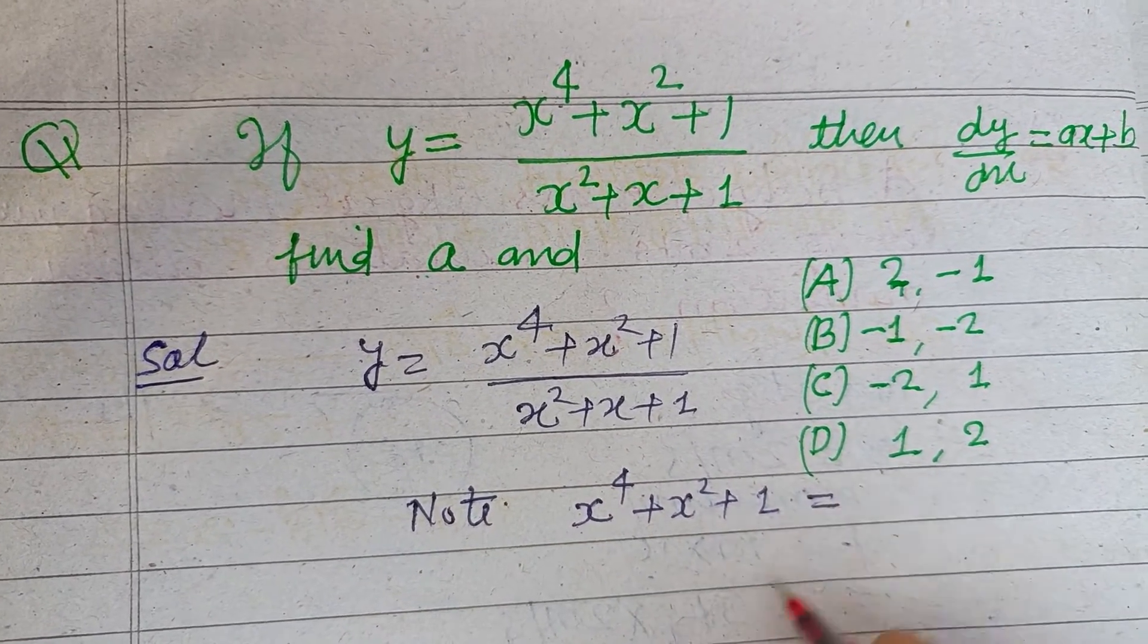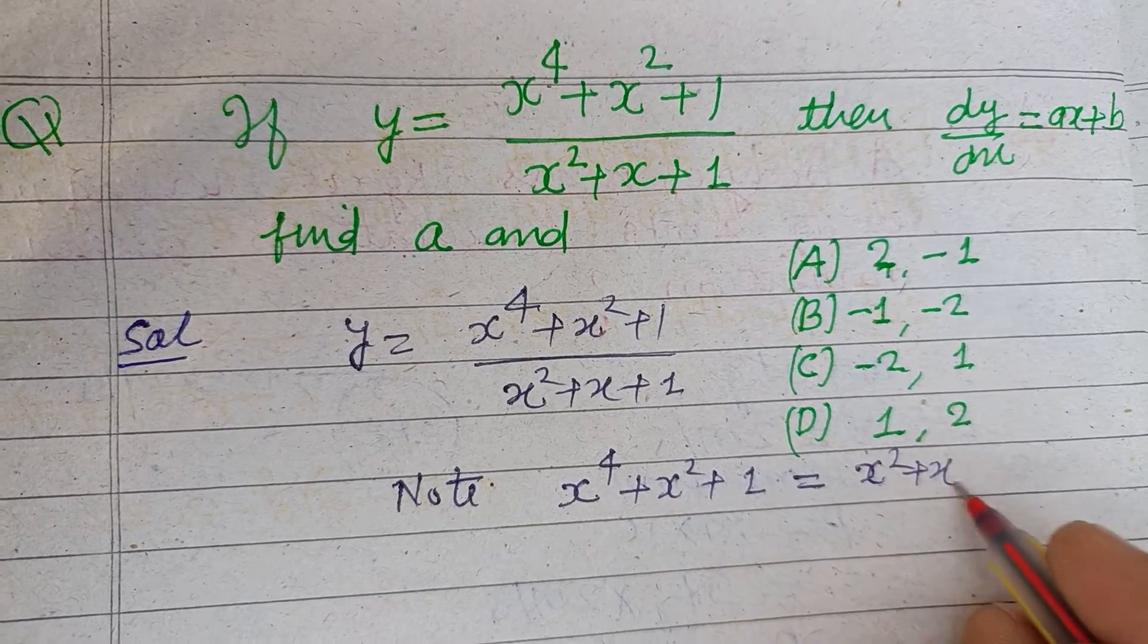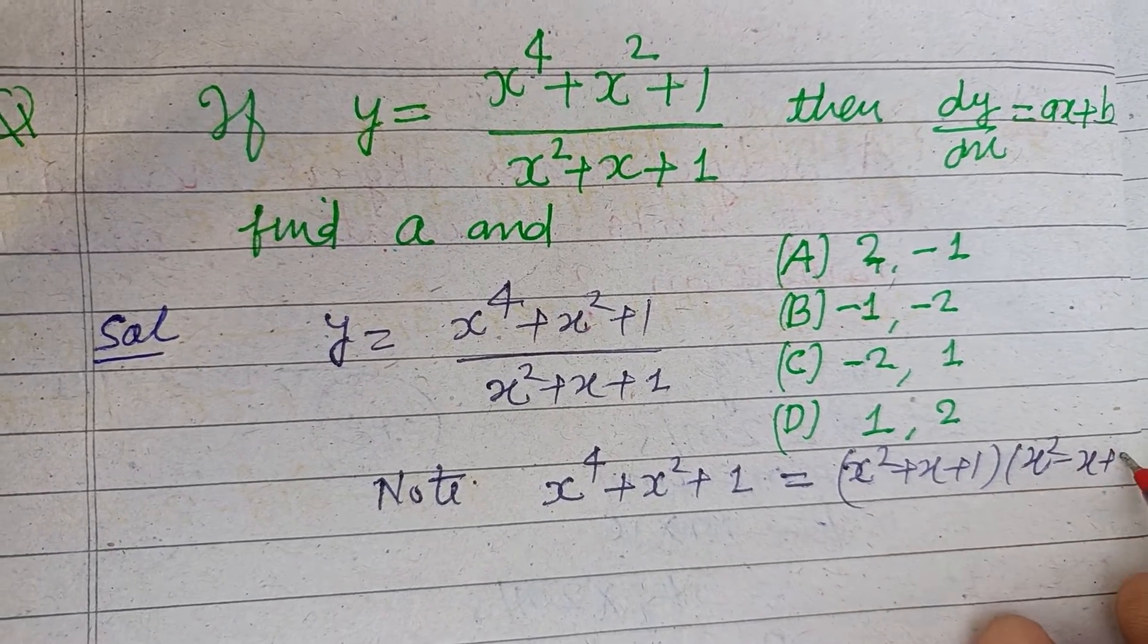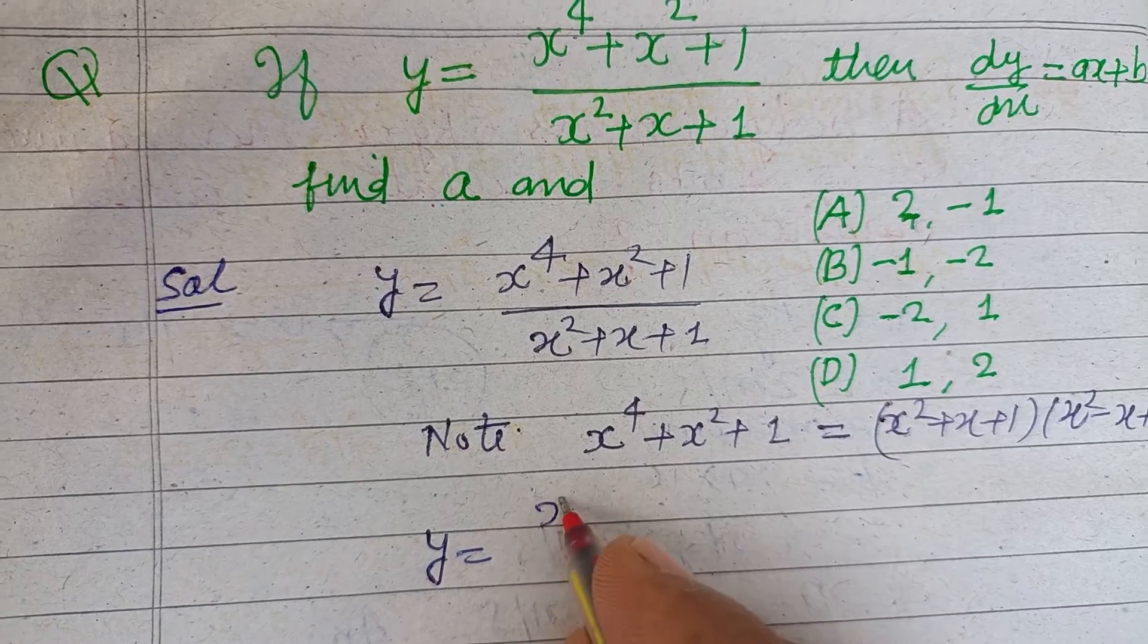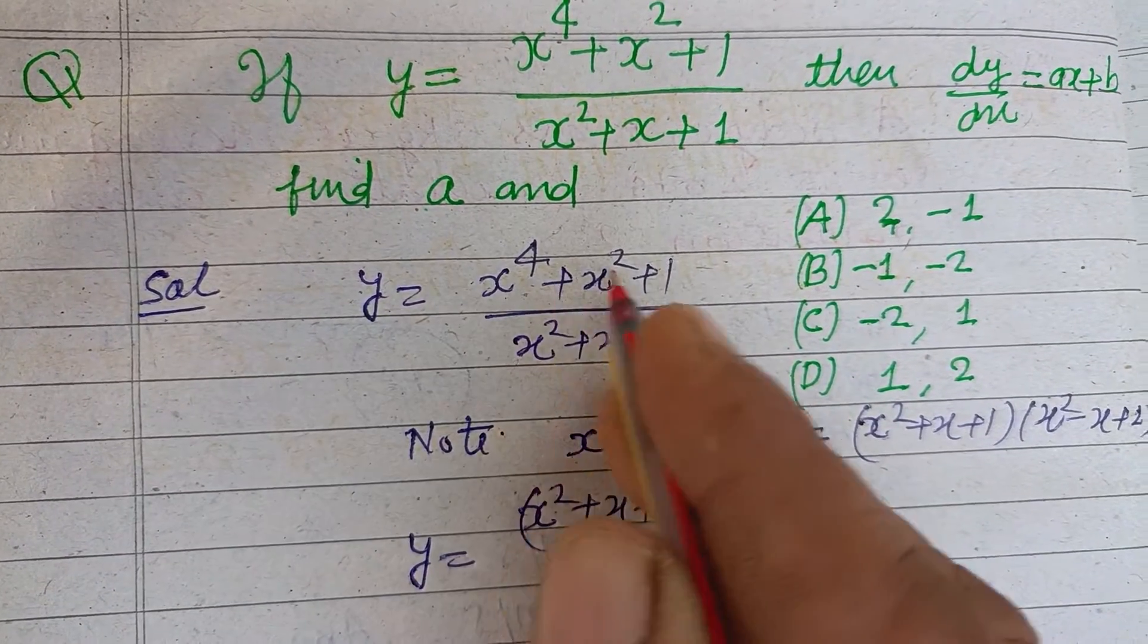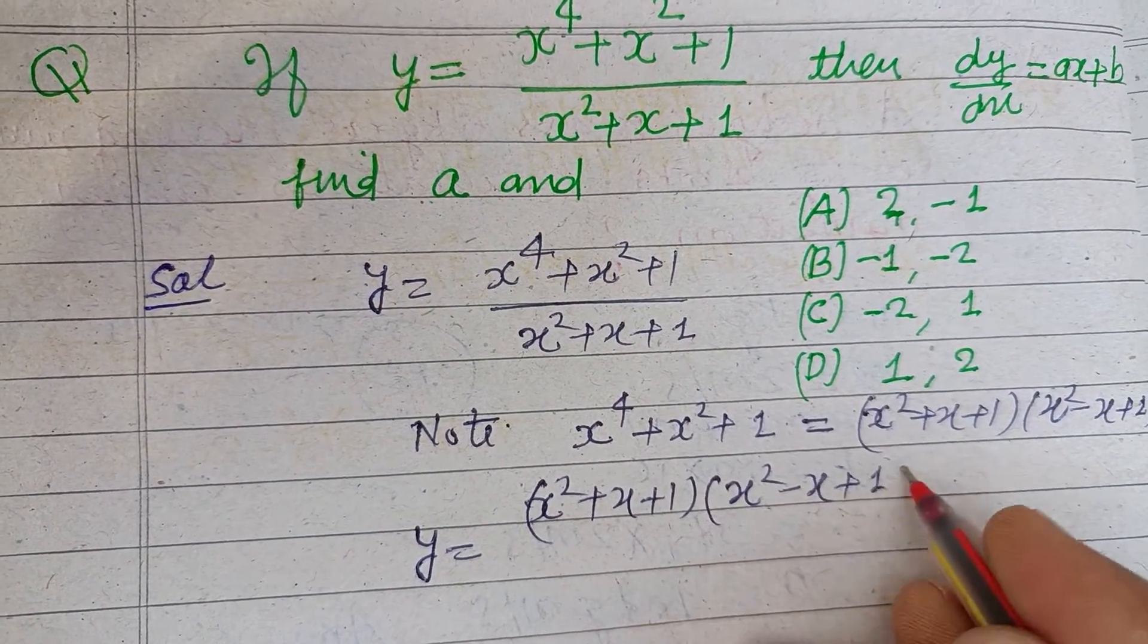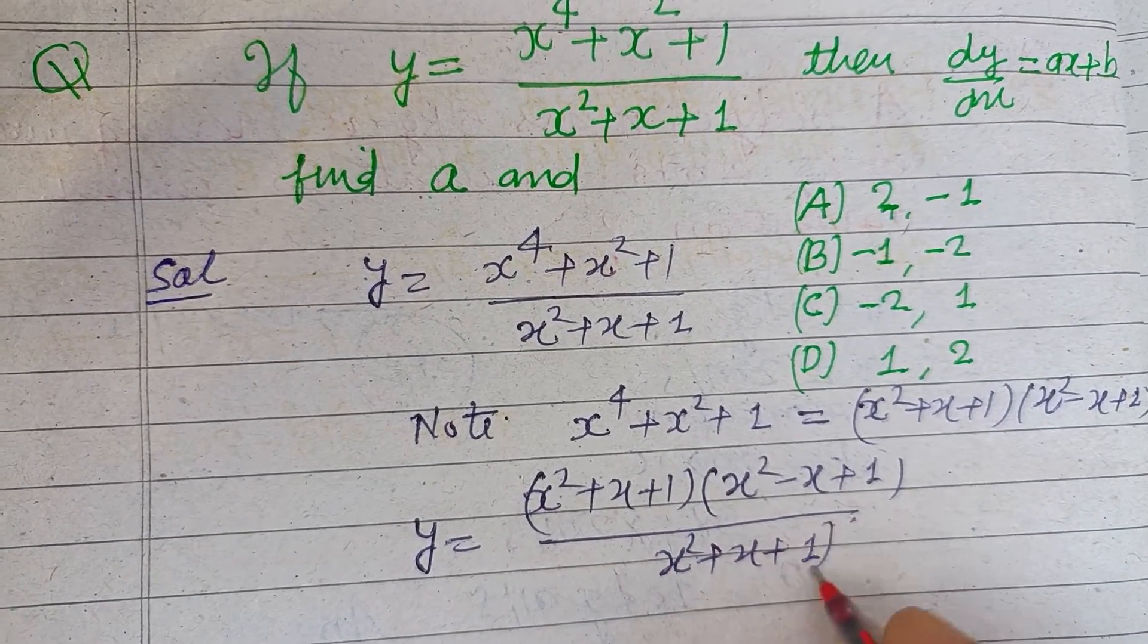So using this, x squared plus x plus 1 in place of x to the power 4 plus x squared plus 1, we get x squared plus x plus 1 times x squared minus x plus 1 over x squared plus x plus 1. This is divided by 1 times, and we got y equals x squared minus x plus 1.